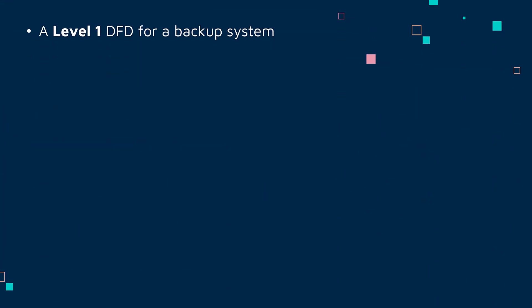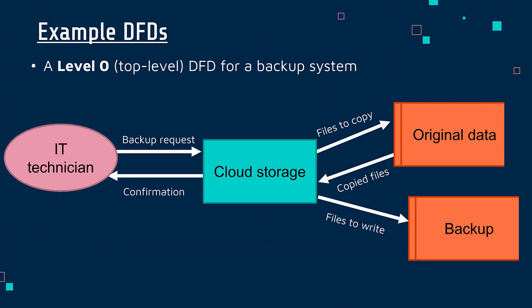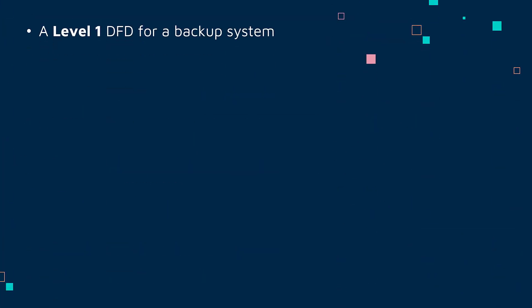That was a level zero DFD. Now let's look at a level one DFD — this is all about the level of detail. Level zero is quite high level, quite an overview of the system. Level one gets more detailed. Level two would get even more detail still, level three and so on. But in reality, you usually only have a level zero or level one DFD. So if you are asked to draw a level zero DFD you can be a little more general; a level one DFD should have a bit more detail.